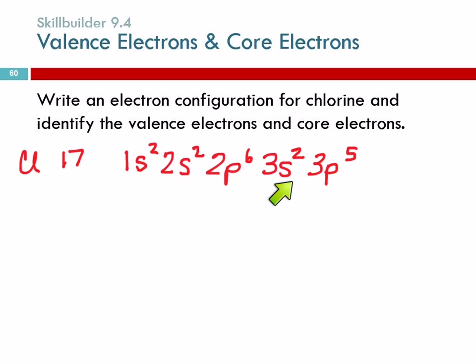We have 3s and 3p. They're all on the third level. In the hotel, all of these electrons are staying on the third floor. That's the highest floor where anybody's sleeping. These are the valence electrons, all of them. How many are there?